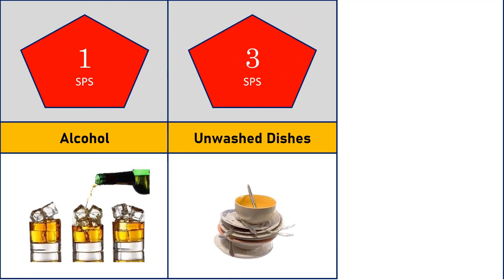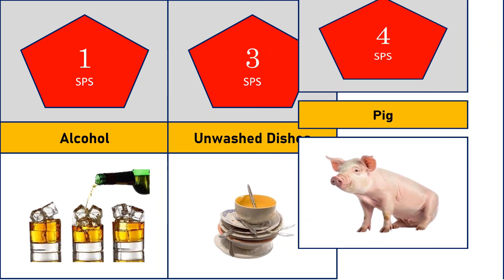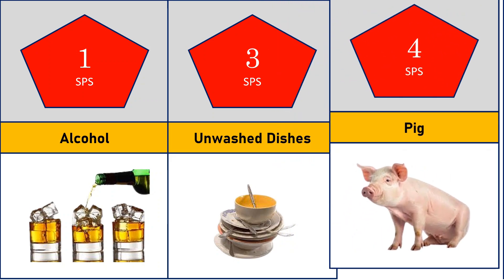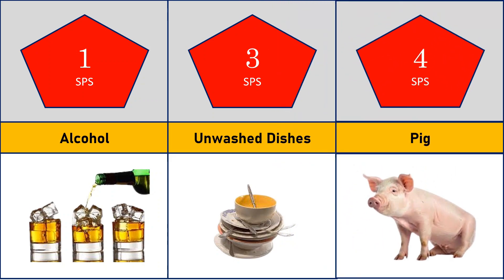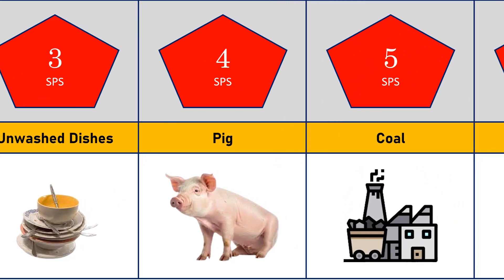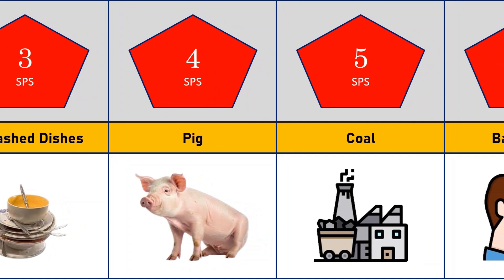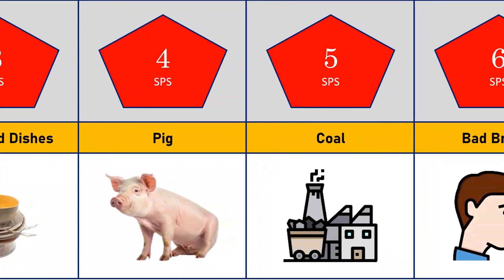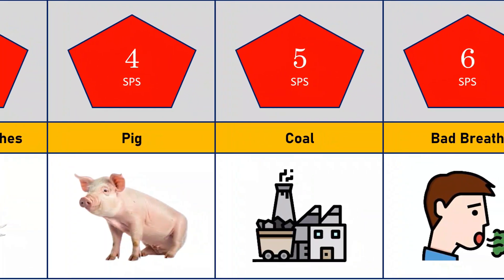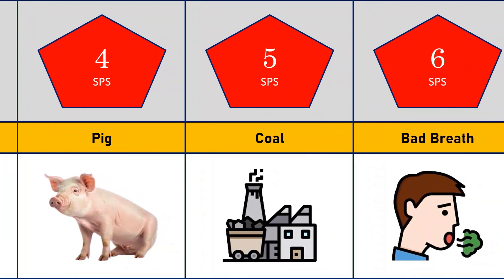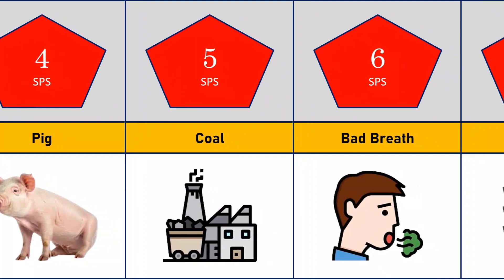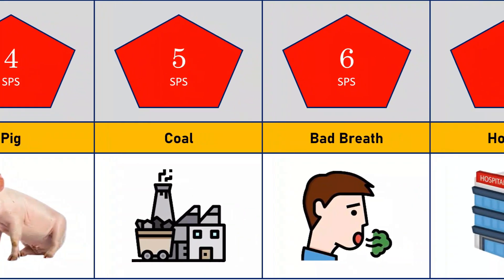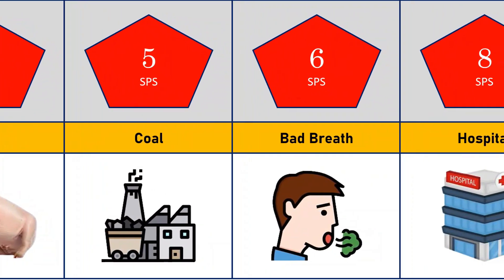Alcohol smell is 1 SPS. Smell of unwashed dishes: 3 SPS. Smell of pig: 4 SPS. Smell of coal: 5 SPS.